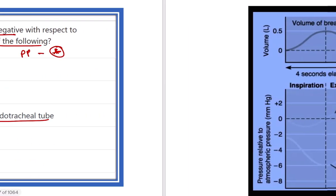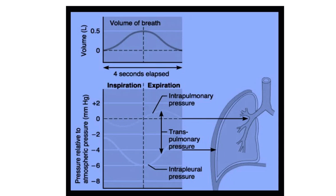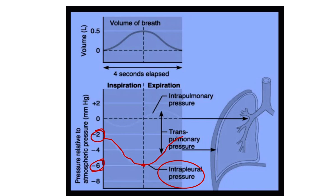Let's look at the intrapleural pressure graph. We can see two important lines here — this is the intrapleural pressure. At this point it is very negative, about minus 6. On the other hand, here we can see it ranges from minus 2. So normally, at the end of expiration the intrapleural pressure is minus 2 mmHg, and at the end of inspiration the maximum pressure is minus 6 mmHg.